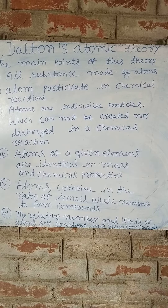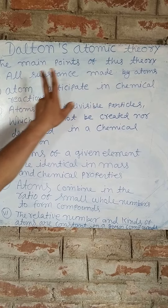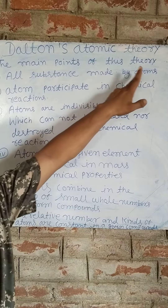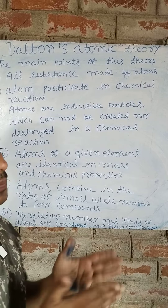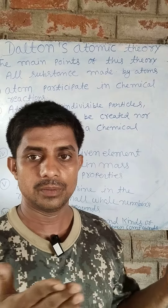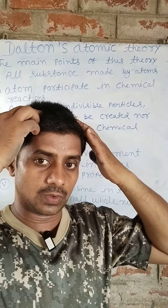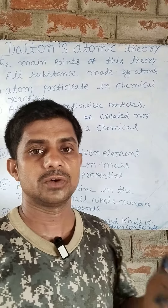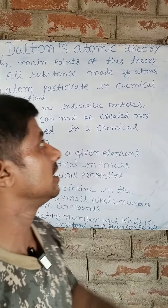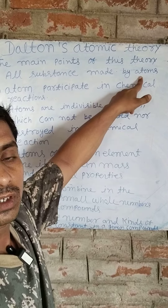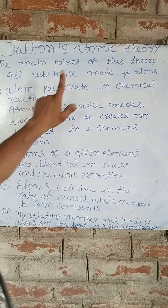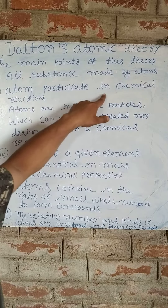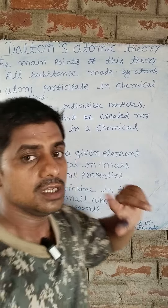Dalton's Atomic Theory. The main points of this theory are: substances are made by atoms, and atoms are the smallest particle of a substance that participate in chemical reactions.